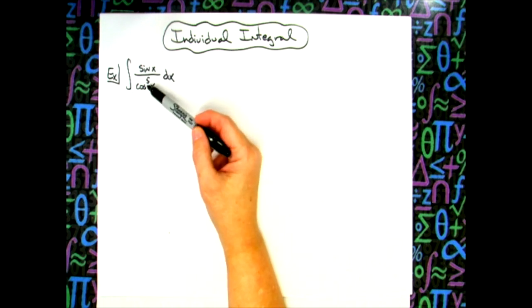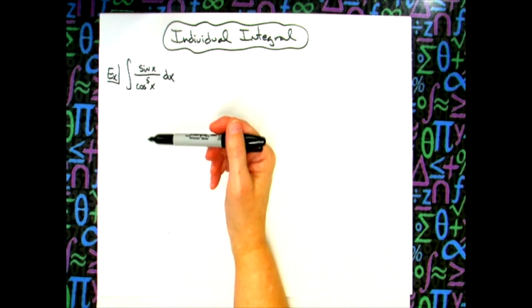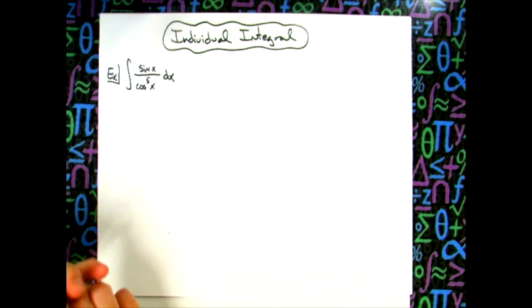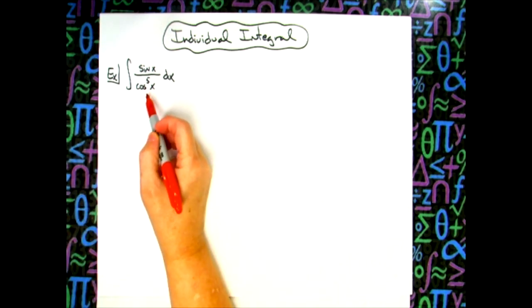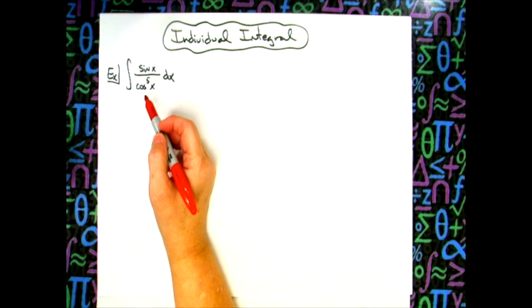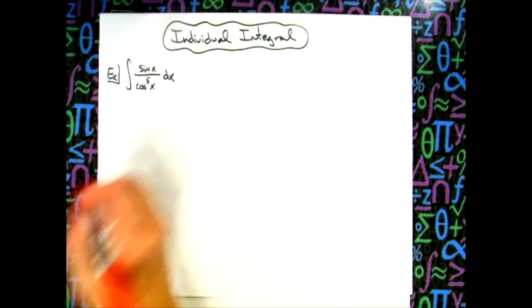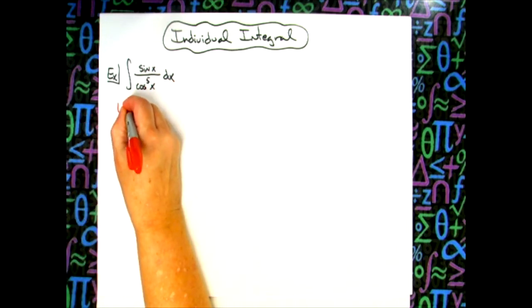The key here is looking at that denominator and trying to find the inside most part. The inside most part of this denominator would be cosine. If we do a little bit of thinking ahead we can see that the derivative of cosine is going to be negative sine, so those signs are going to cross out really nice. So that's where we're going to start.